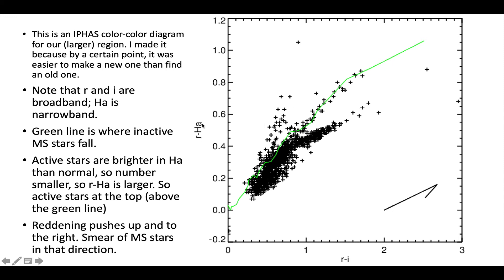When you have H alpha bright, the numbers get smaller. So R minus H alpha gets larger. So all the guys up here are the active stars. In other words, the likely young stars. These guys are red in the main sequence. You can see they've been pushed out more or less parallel to the reddening vector from that clump down there.